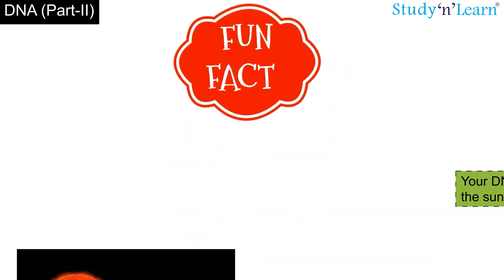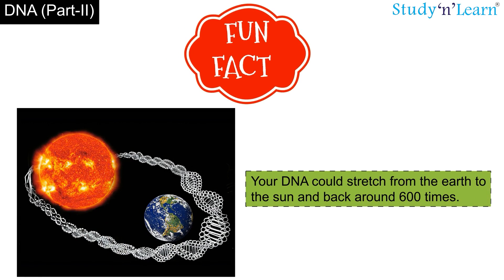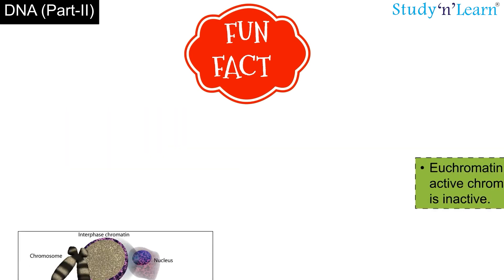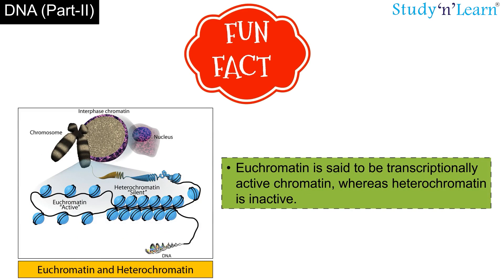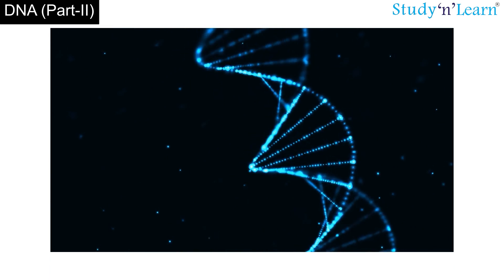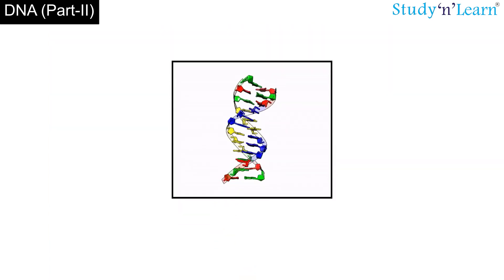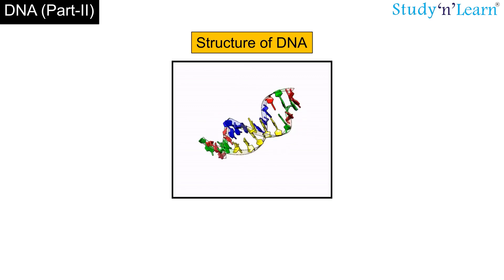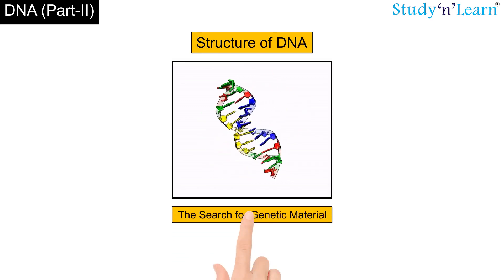Here are some fun facts: your DNA could stretch from the Earth to the Sun and back around 600 times. The sequence in one person's DNA is only 0.1% different from any other person's DNA, but that equates to 3 million differences. Euchromatin is transcriptionally active chromatin, whereas heterochromatin is inactive. In this module, we studied about the structure of DNA. In our next module, we will get a detailed insight into the search for genetic material.